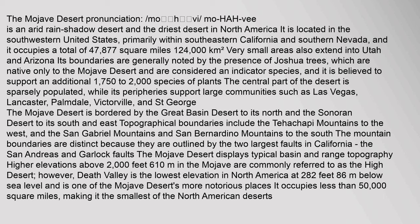Its boundaries are generally noted by the presence of Joshua trees, which are native only to the Mojave Desert and are considered an indicator species. It is believed to support an additional 1,750 to 2,000 species of plants. The central part of the desert is sparsely populated.